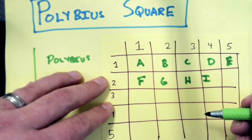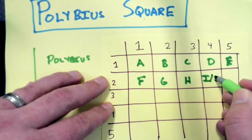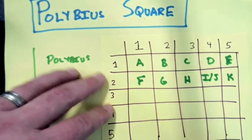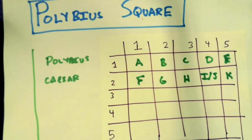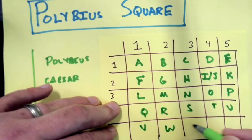Well, back then, they had 25 because I and J were the same letter. So in modern days, if you were going to do this, you would take two letters and just combine them. I end up with this.